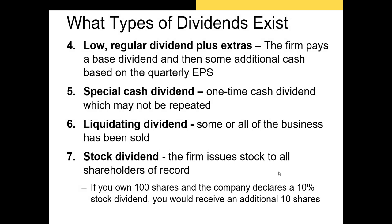The next type is the low regular dividend plus extras. This policy is sometimes used by conservative managers to ensure the firm has enough cash flow in bear markets to continue making dividend payments. The firm sets a small quarterly dividend. If the firm has low earnings per share, that small dividend is the only one paid. However, if the firm has really high earnings per share, it'll increase the dividend just for that quarter.